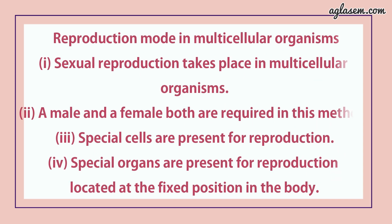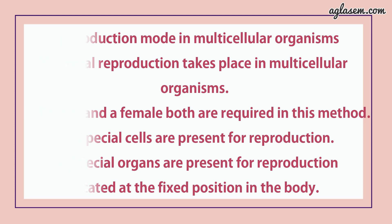Now let's talk about reproduction in multicellular organisms. Here, sexual reproduction takes place. A male and a female both are required in this method. Special cells are present for reproduction, and special organs are present for reproduction, located at fixed positions in the body.